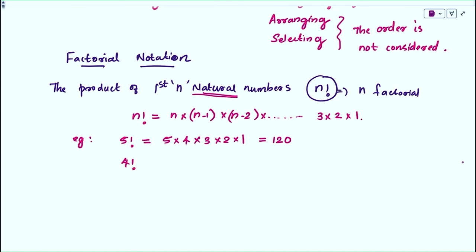Also, 4 factorial is equal to 4 × 3!, which can also be written as 4 × 3 × 2 × 1, which equals 24. This is very useful in studying combinations.